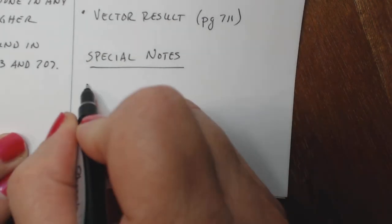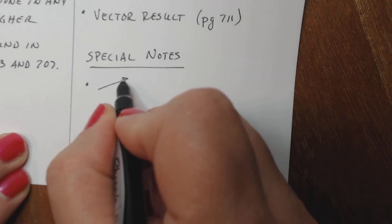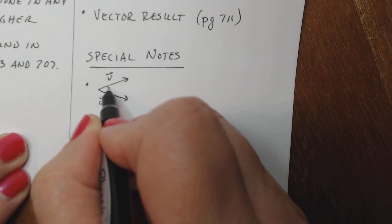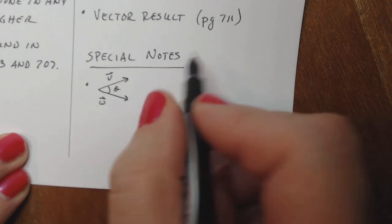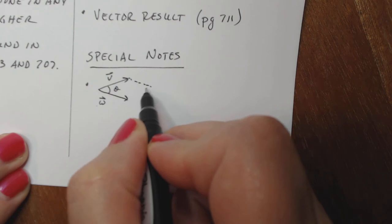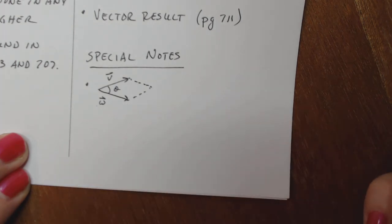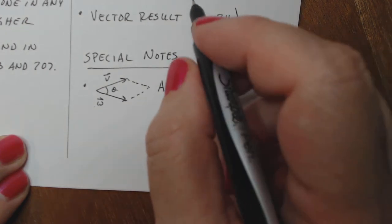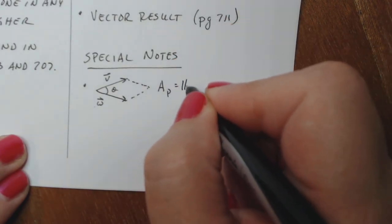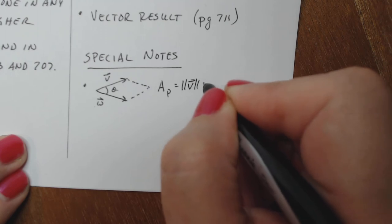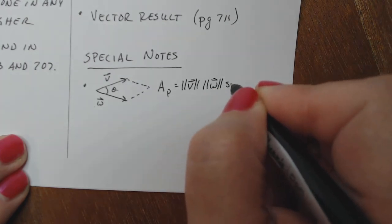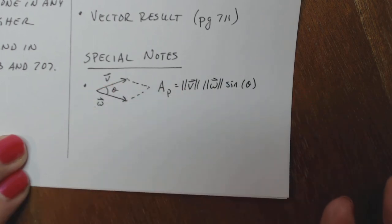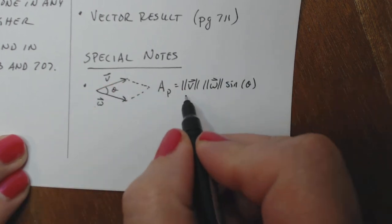So if I drew this parallelogram, here's V and here's W and there's some angle in here. It's not a right angle. There's just some angle theta and I draw a parallelogram like this. The area of that parallelogram is the magnitude of V times the magnitude of W times the sine of that theta that's between the vector V and W.